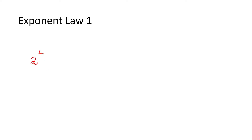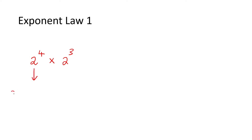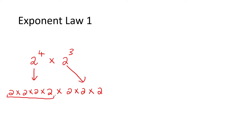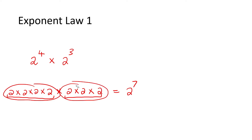If you take, let's say, 2 to the power of 4, and let's say we multiply by 2 to the power of 3. Remember in our previous lessons, we learned how to expand this. We know that this one is the number 2, four times, and this one is the number 2, three times. And so, if you just put all of that together, we can see that we now have the number 2 seven times.